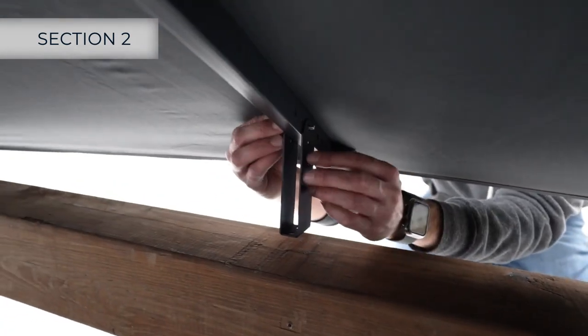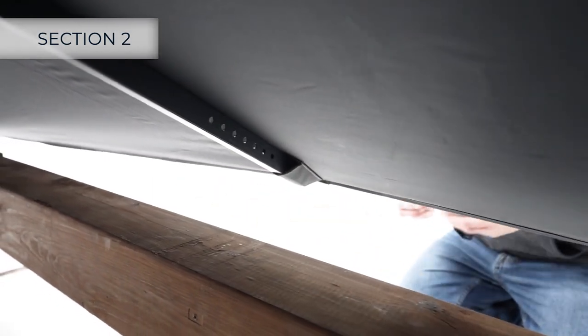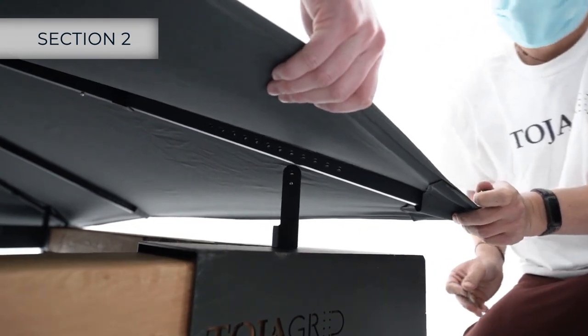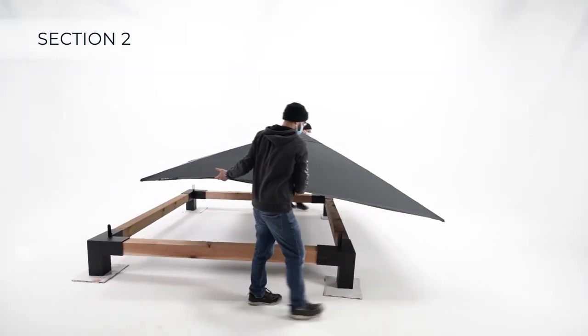Then, remove the middle bracket, unfasten the corner brackets, and remove the umbrella top, setting it to the side.